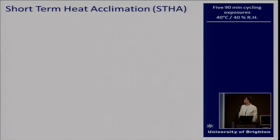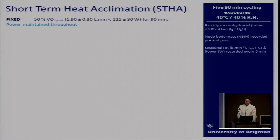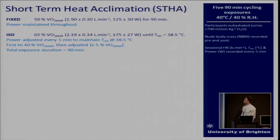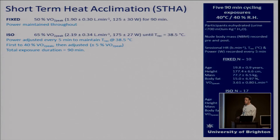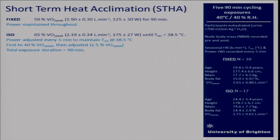Short-term heat acclimation was five 90-minute exposures in a very warm, very humid environment. Fixed participants exercised for 90 minutes at a fixed intensity of 50% of VO2 peak, with power maintained throughout. The isothermic group sustained a 90-minute exposure starting at 60–65% of VO2 peak but targeted a rectal temperature of 38.5°C, then made power adjustments once that rectal temperature was reached. There were no distinct differences between participants, though the ISO group was slightly larger as it was later subdivided into continuous and progressive models.